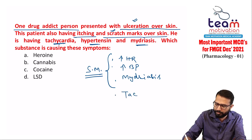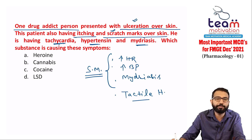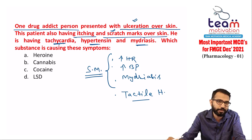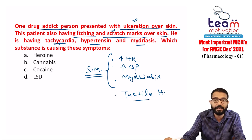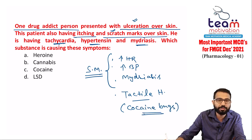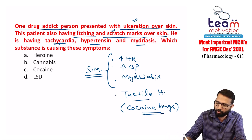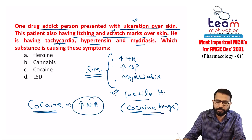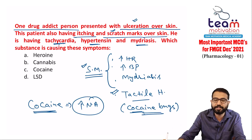The patient believes insects are crawling over the skin — this is tactile hallucination called cocaine bugs, very common in cocaine abusers. Cocaine acts by increasing noradrenaline levels, producing sympathomimetic effects: tachycardia, hypertension, and mydriasis.